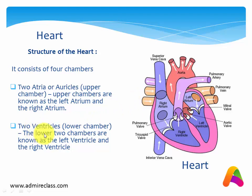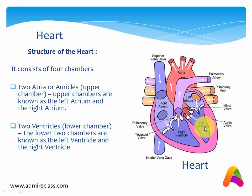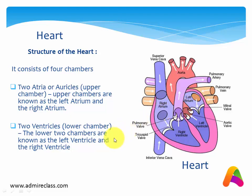The next ones are the two ventricles — the lower chambers. The lower two chambers are known as the left ventricle and the right ventricle. You can see the right ventricle and the left ventricle in the picture. So these two are the lower chambers of the heart, while the right atrium and left atrium are the upper chambers.